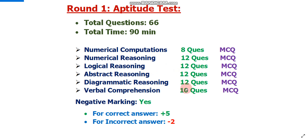Fifth section is diagrammatic reasoning: 12 questions, MCQ type. Sixth section is verbal comprehension: 10 questions, MCQ type. I'll make a separate video on each of these sections. Regarding marking: for a correct answer you will get 5 marks, and for an incorrect answer 2 marks will be deducted.